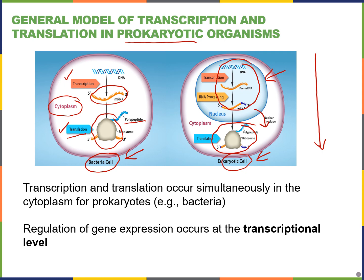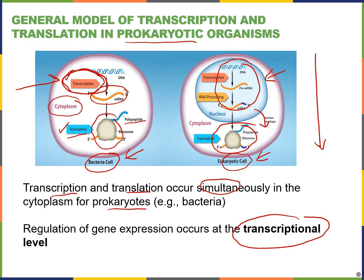Since transcription and translation occur pretty much at the same time in prokaryotes, regulation of gene expression really occurs at the transcriptional level for prokaryotes. In eukaryotes, since the process is much more complicated, control of gene expression occurs at many different stages within the cell.